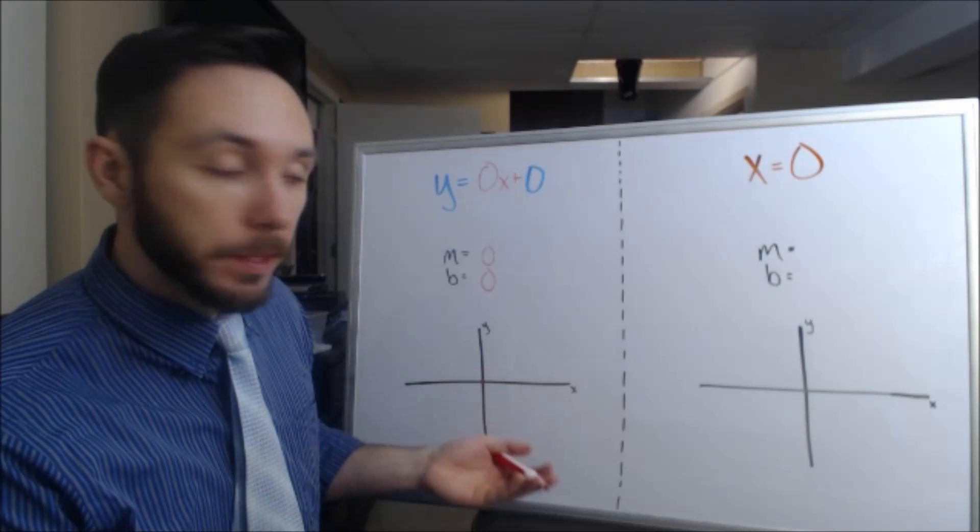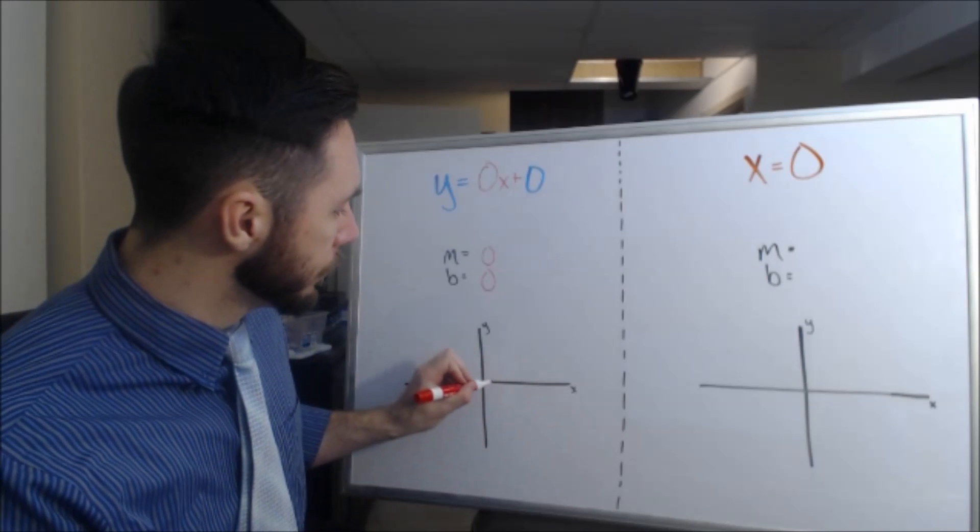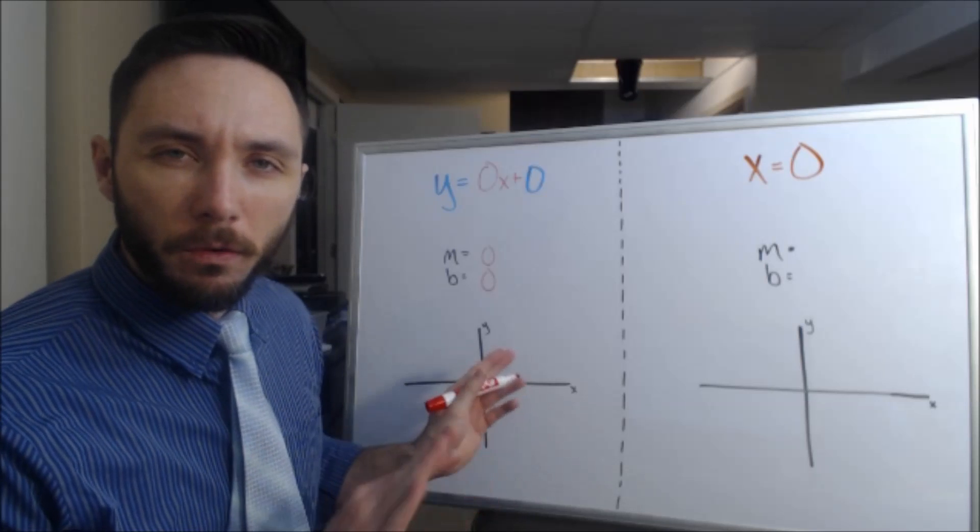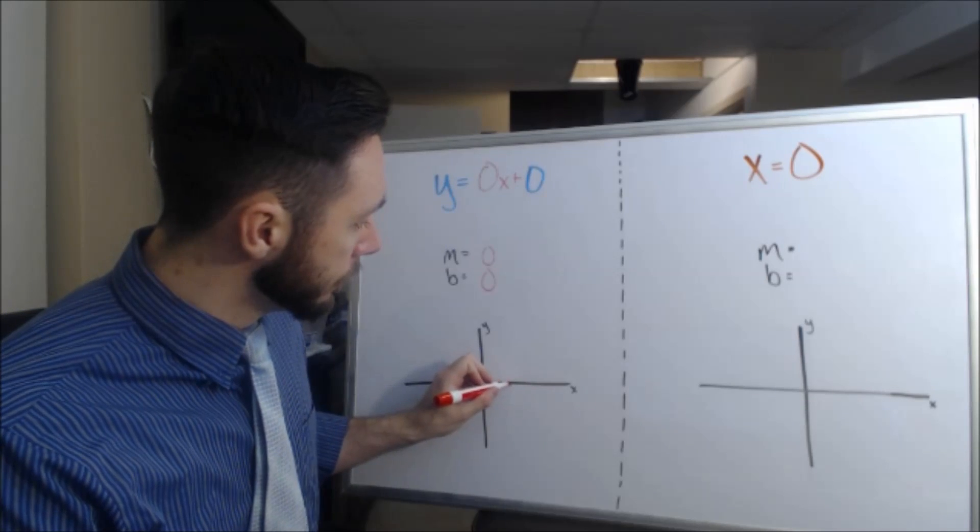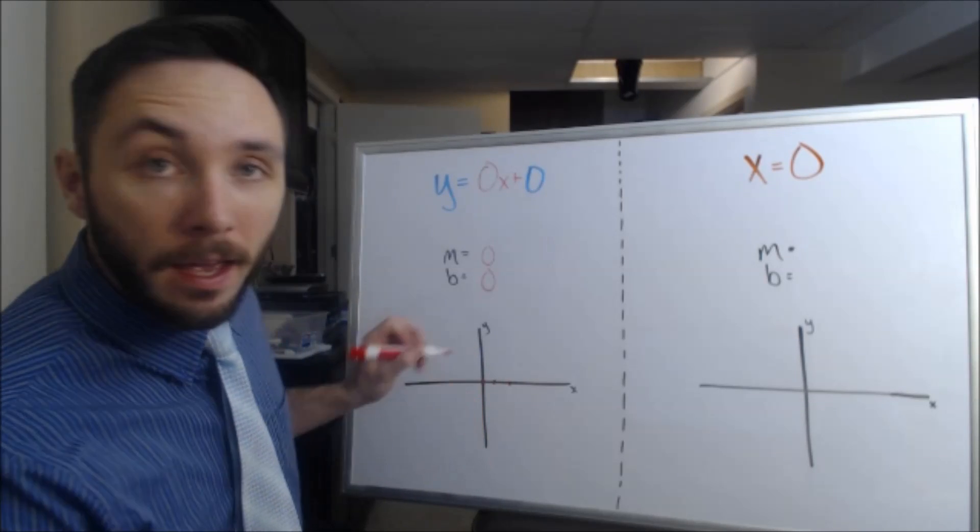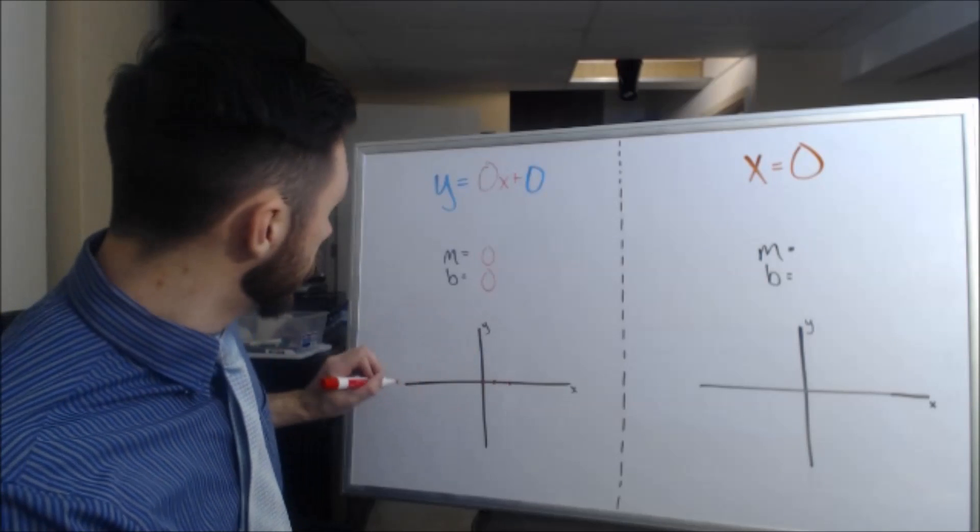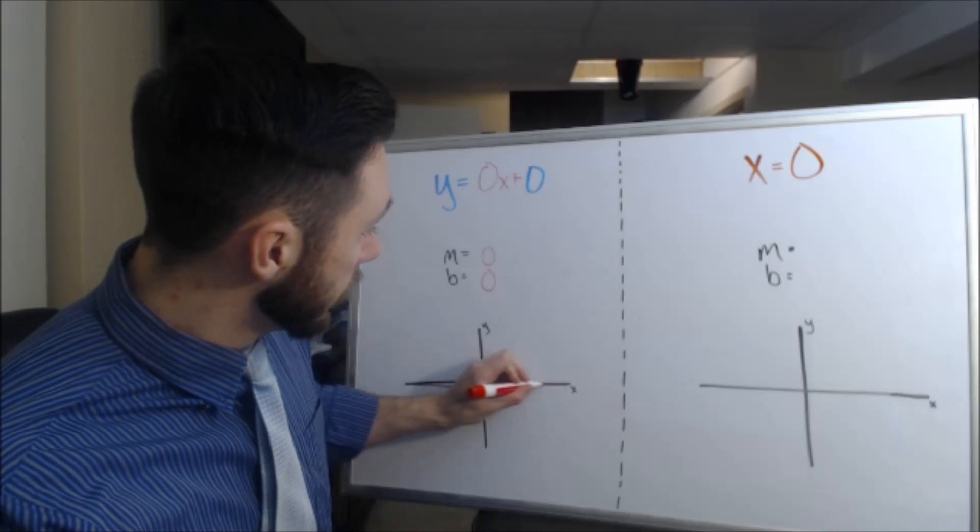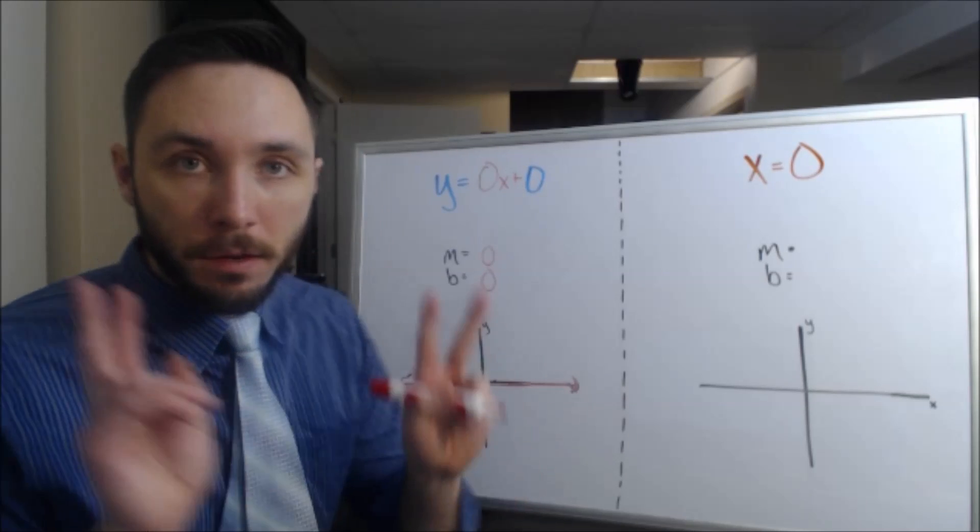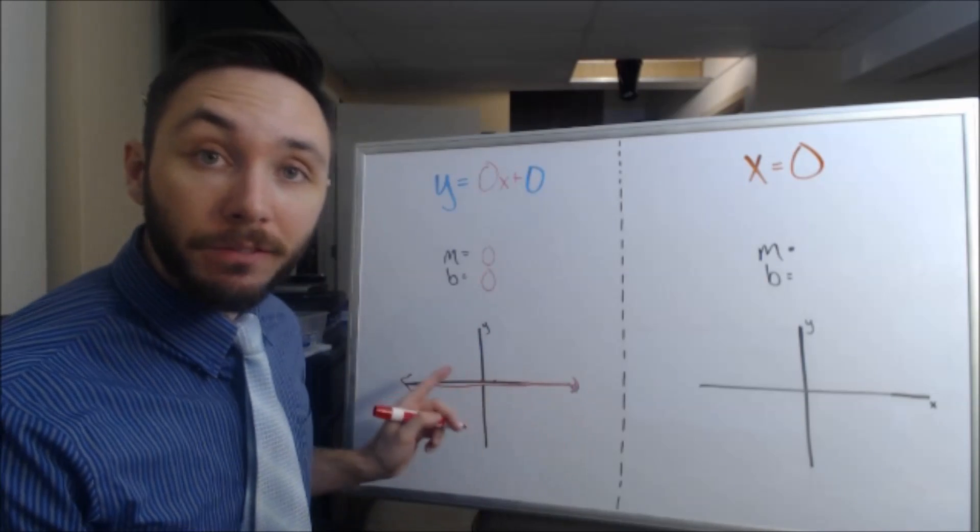And if I have a slope of 0, that would be up 0, right 1, up 0, right 1. So on and so forth. Actually, it's this perfectly horizontal line, perfectly horizontal line right on the x-axis.